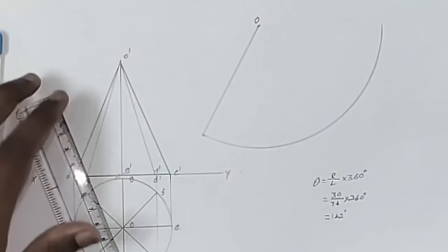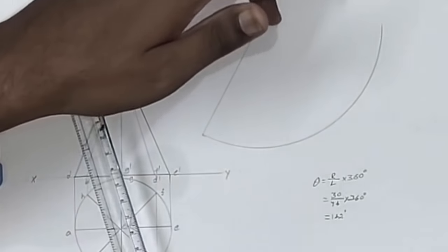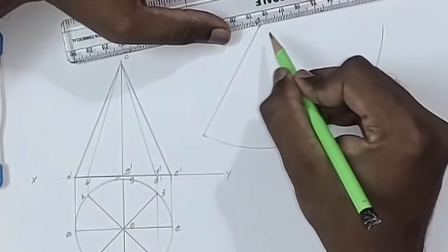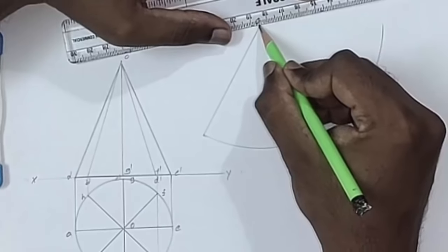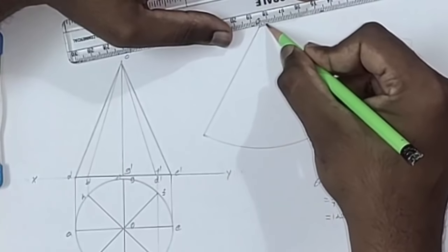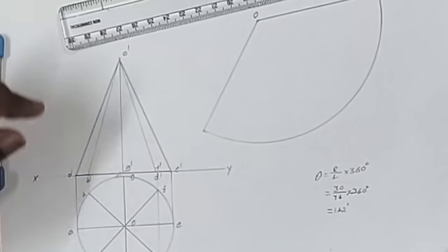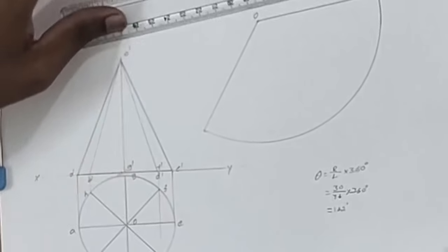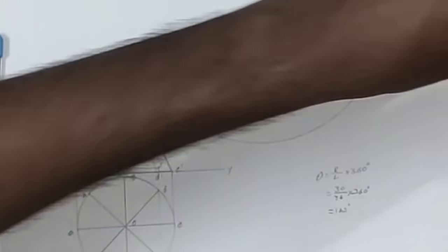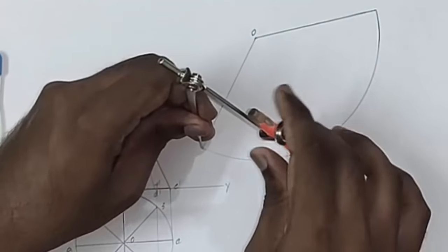Take 142 degrees here using the protractor and mark an angle of 142 degrees. Now divide this sector into 8 equal parts using the technique we already learned.